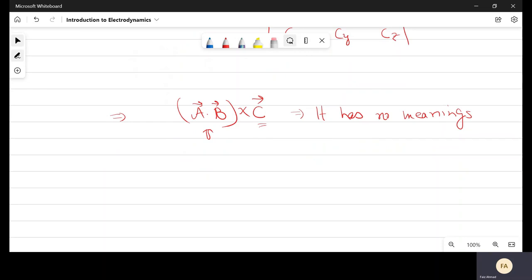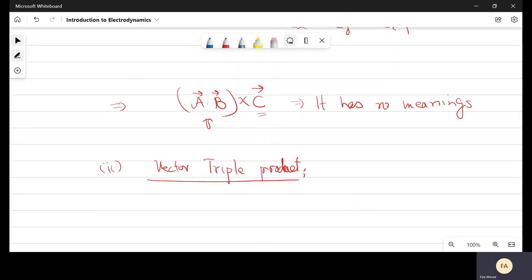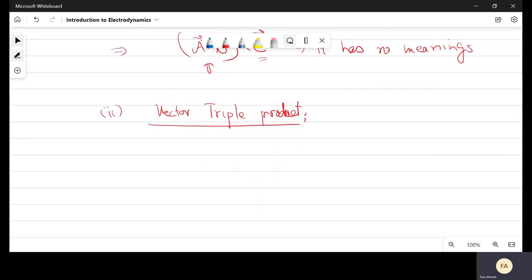So the first type of triple product was scalar triple product. Now we have the second type of triple product, and that is vector triple product.